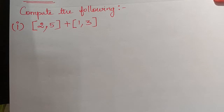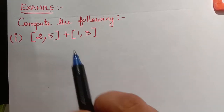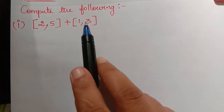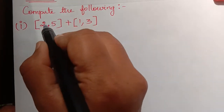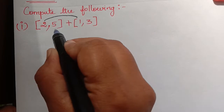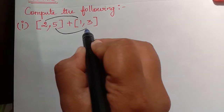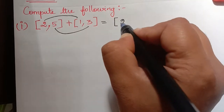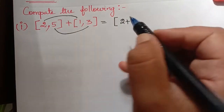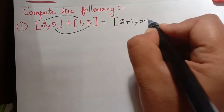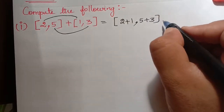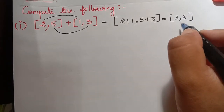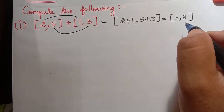Now we shall see an example. Compute the following. For addition: [2, 5] plus [1, 3]. We add component-wise: 2 plus 1 and 5 plus 3, which gives [3, 8]. This is the example for the addition operation.